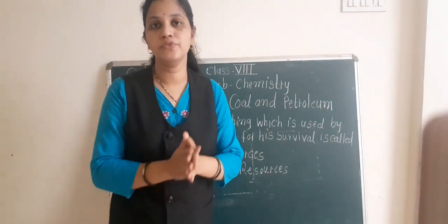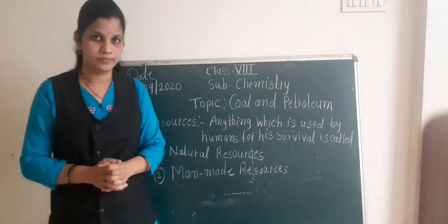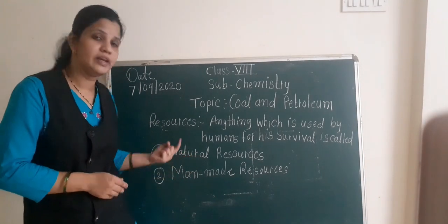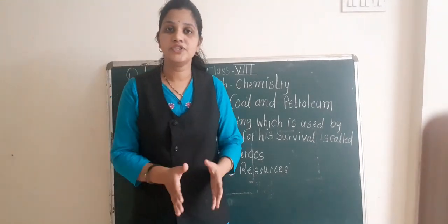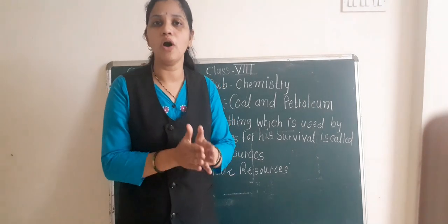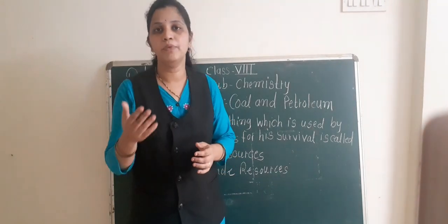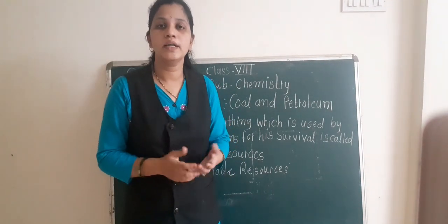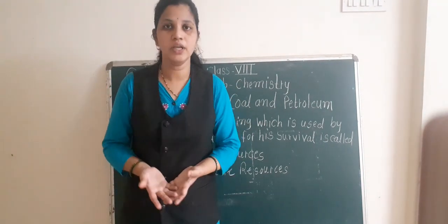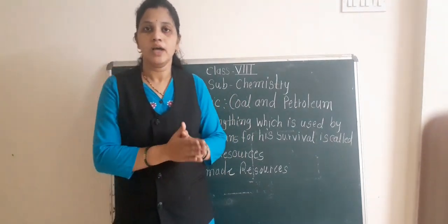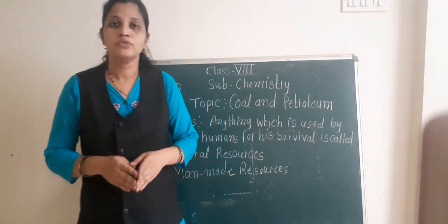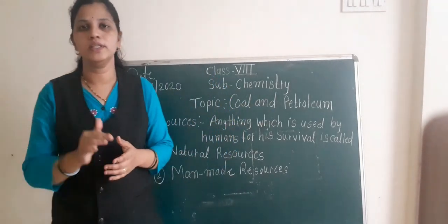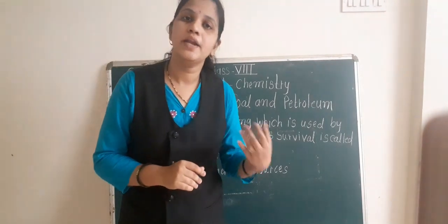Now we will discuss the first one, that is natural resources. Natural means it is naturally present, naturally occurring. For example, water, air, light — these all are natural resources. Those things which are present naturally and we are using them, all those things are known as natural resources.